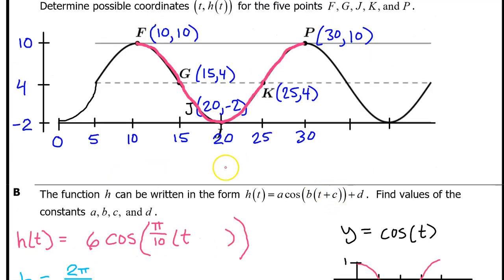The C value will always be the opposite of the starting input value for the period that you are using to write the equation. In this case, the period we chose begins at 10, so the C value will be negative 10. If you choose a different period, then your C value will be different. For example, if you chose this period, your C value would be negative 20 instead of negative 10.